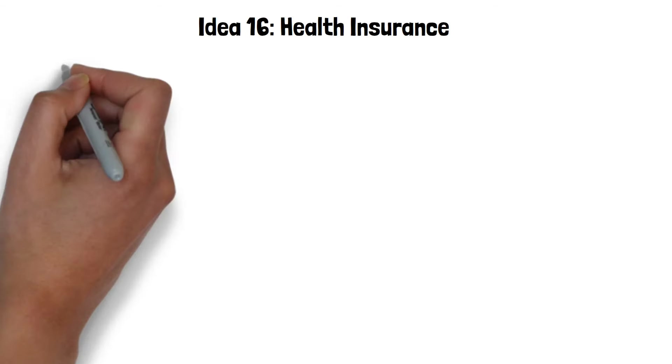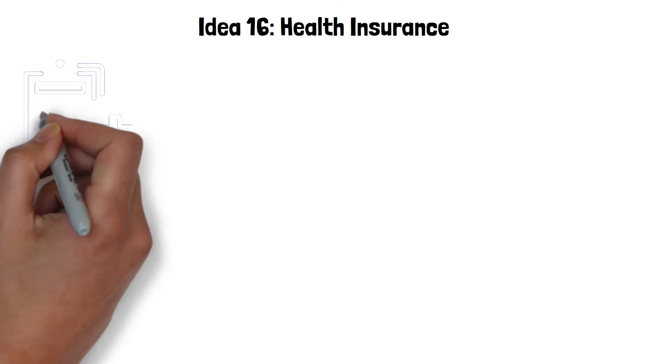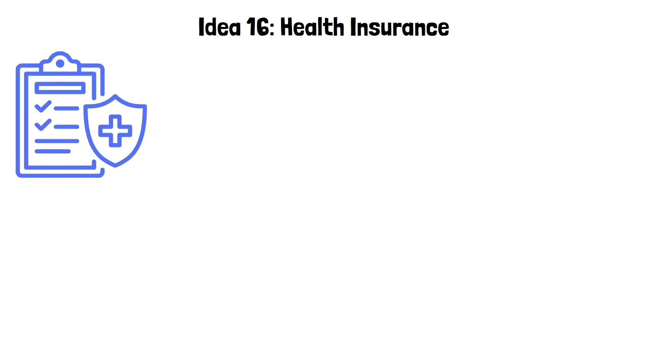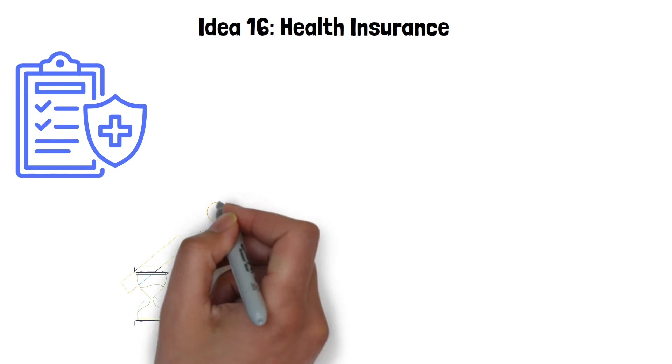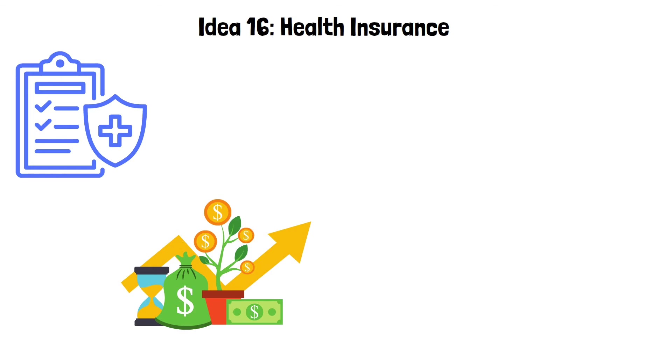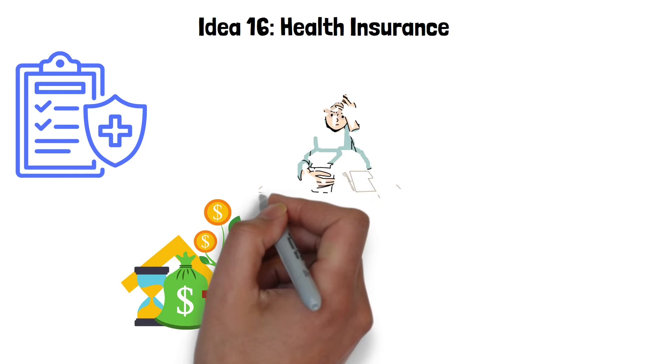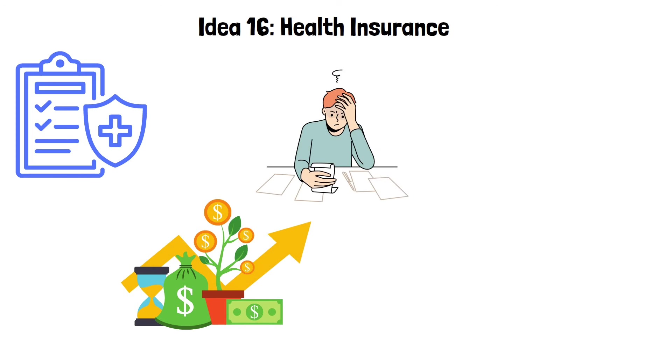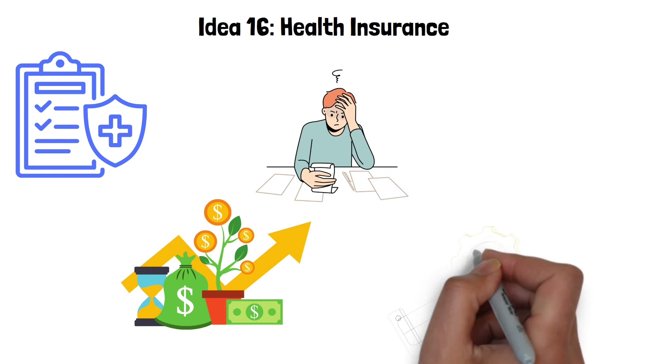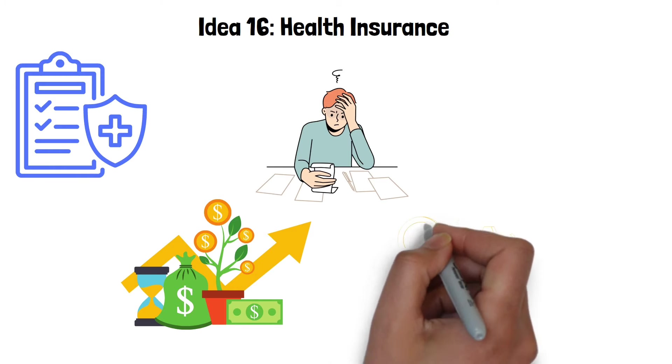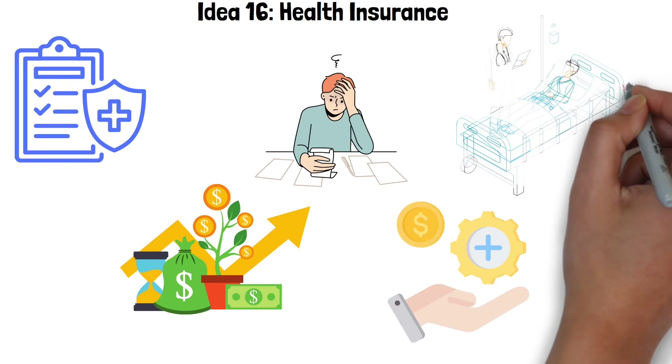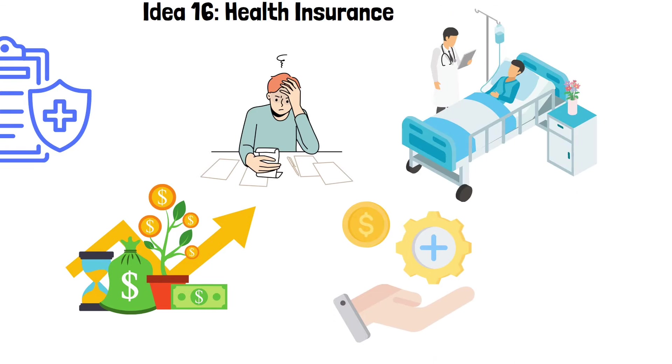Idea 16: Health insurance. Health insurance in the context of wealth building is a crucial element because it acts as a shield against unpredictable and often exorbitant medical expenses. The idea is that while you're working on growing your savings and investments, you also need to ensure that a single health emergency won't derail your financial progress. Medical bills are one of the leading causes of financial distress and can wipe out years of savings if you're not adequately protected. The book touches on the notion that while health insurance may seem like an additional expense when you're healthy, its value becomes inarguably clear during times of illness or injury.